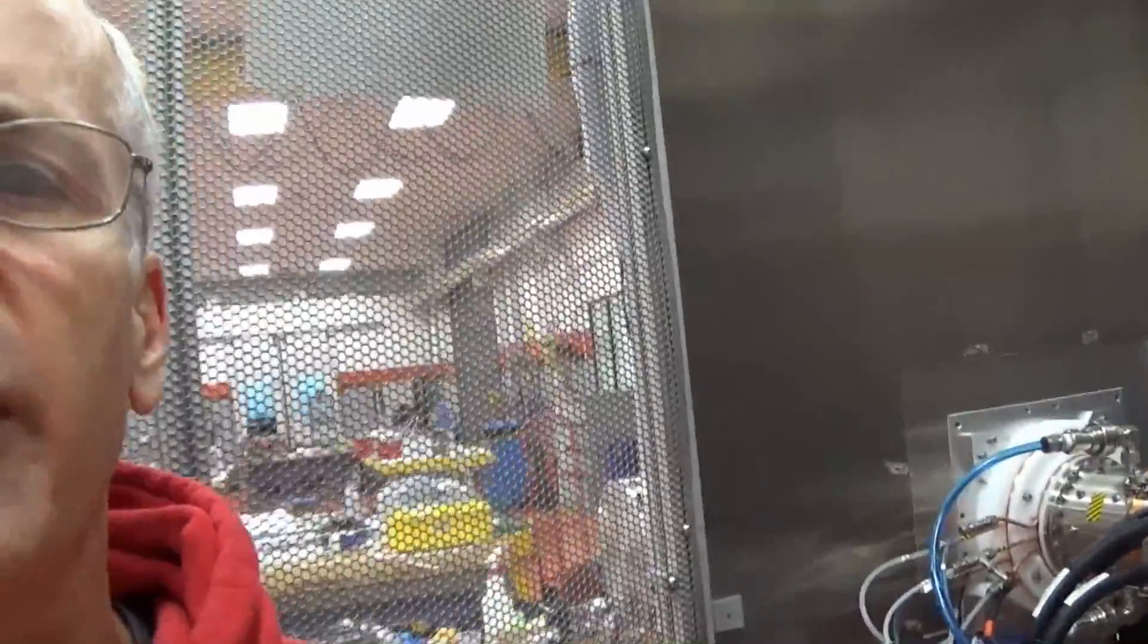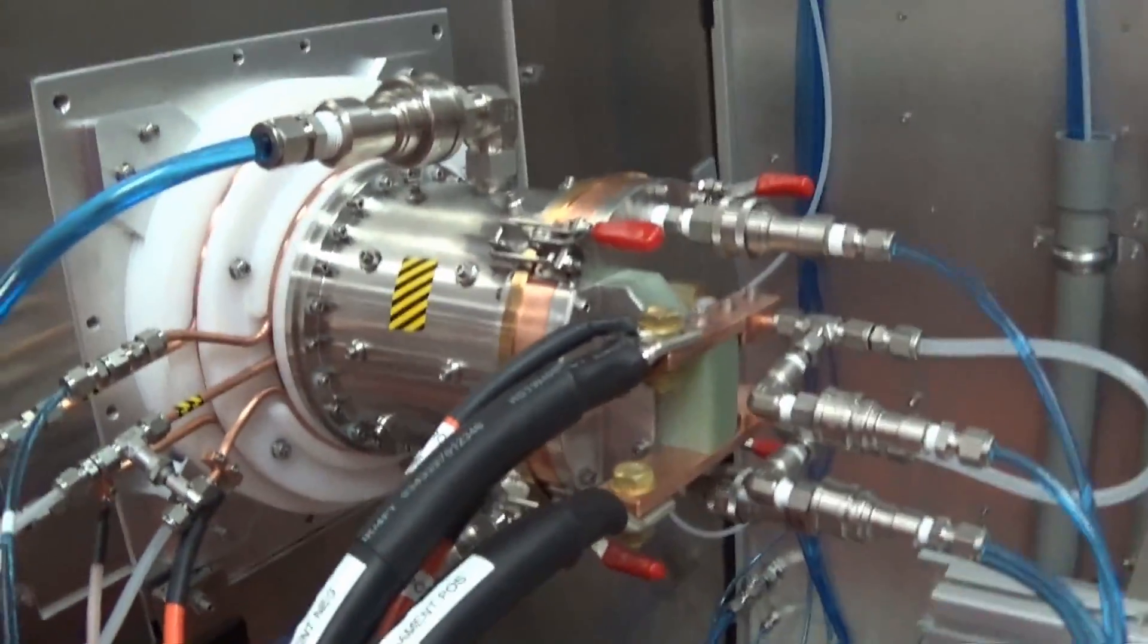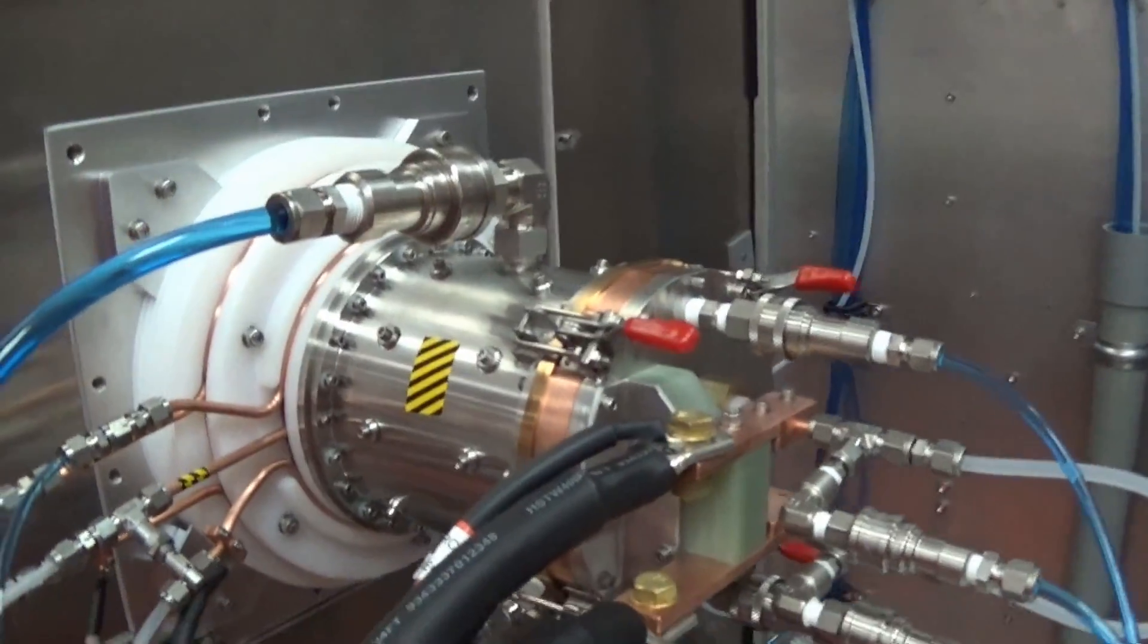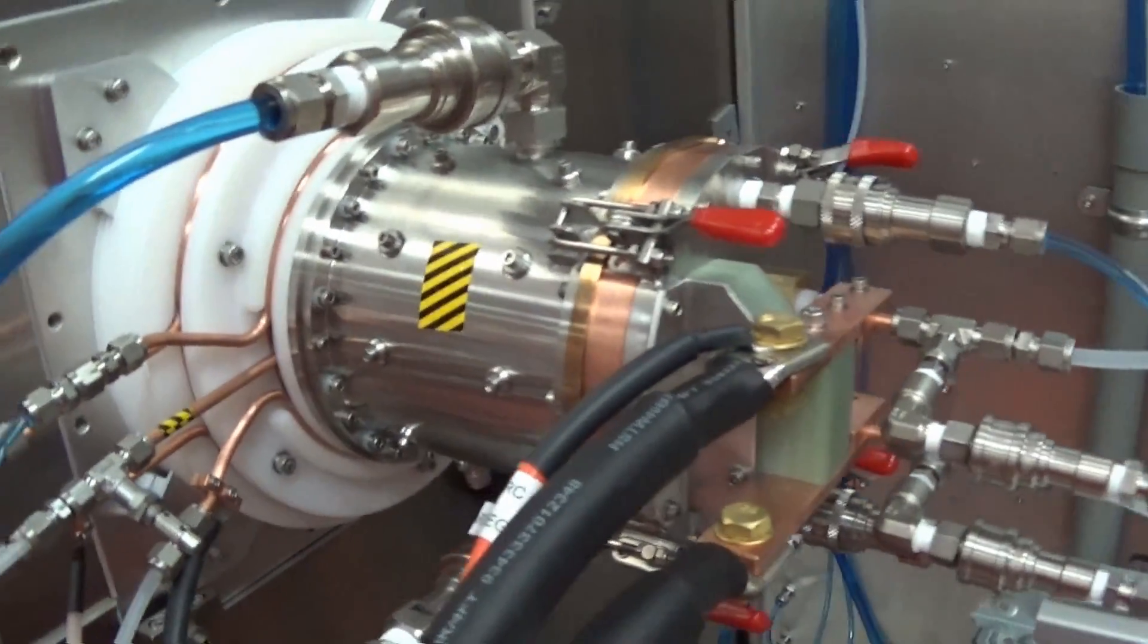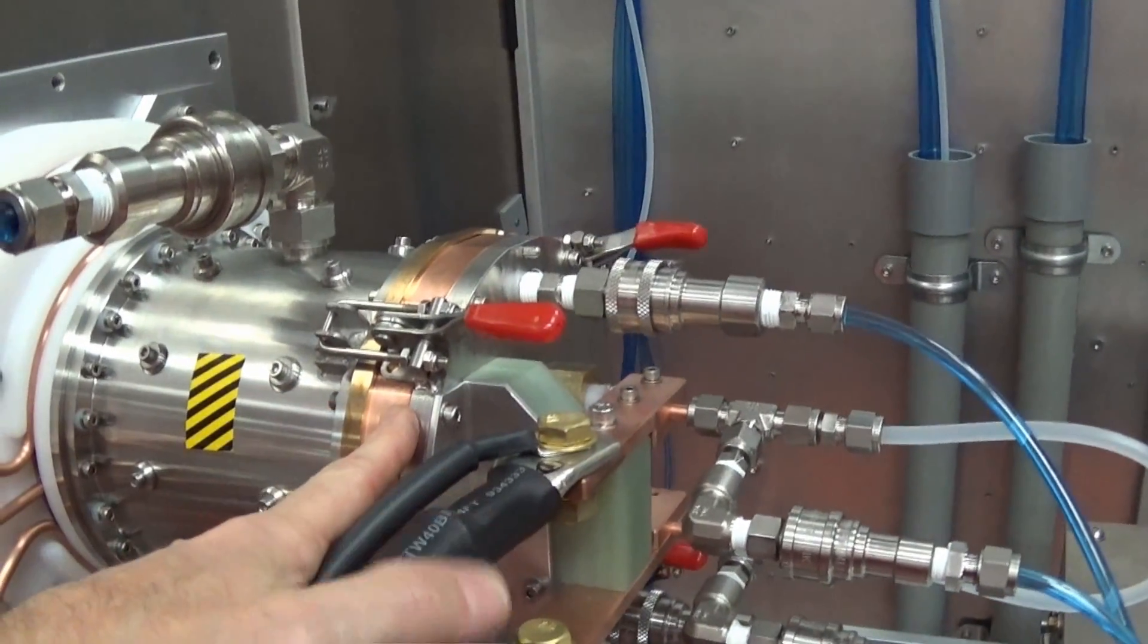Now we're inside. So this device here, this is the ion source, which is essentially just a can. It's an empty can in here with magnets inside it. And on the back plate here is a filament.